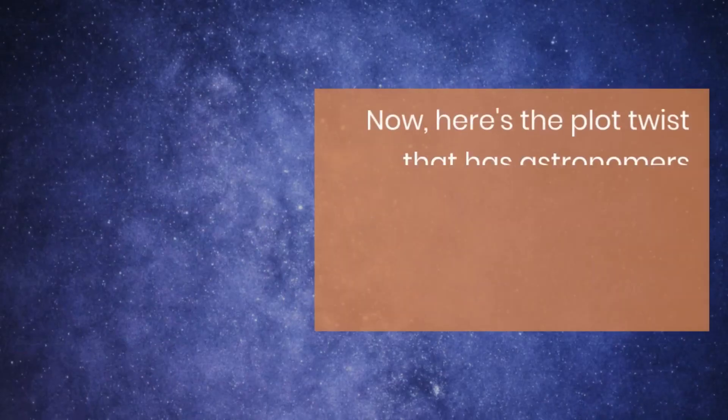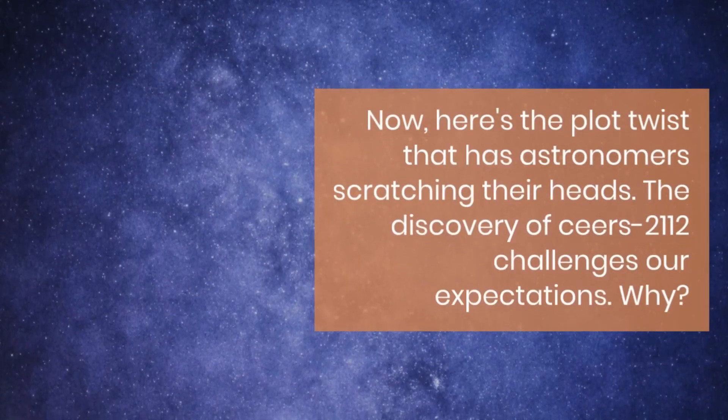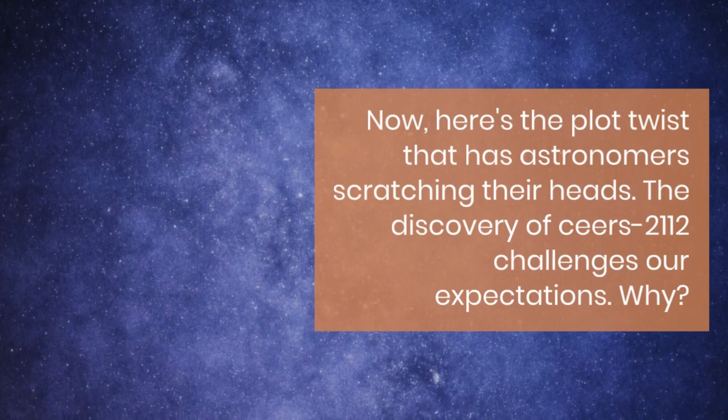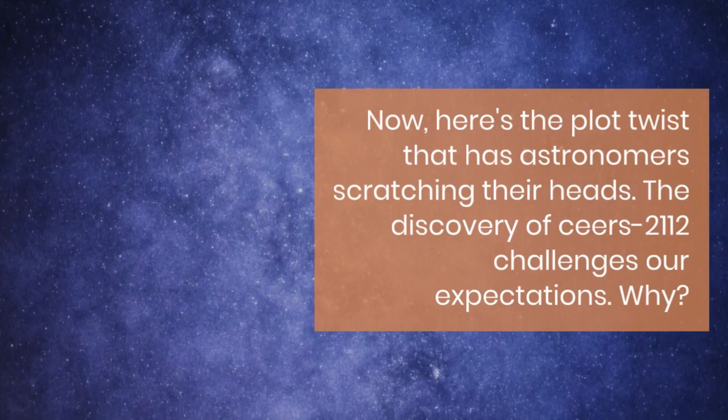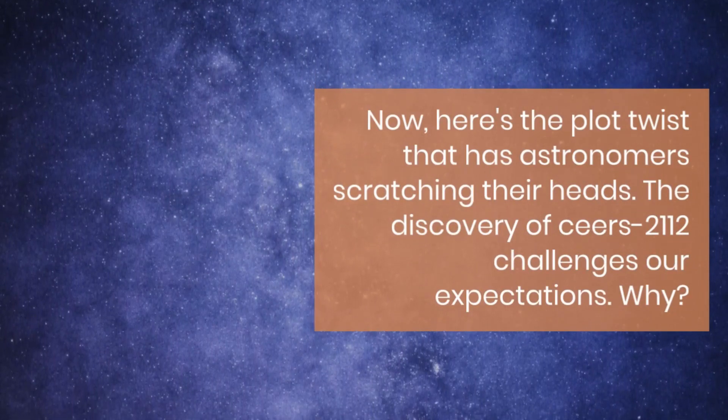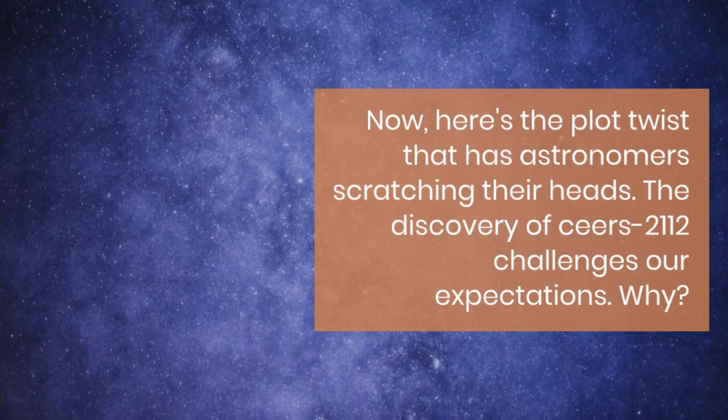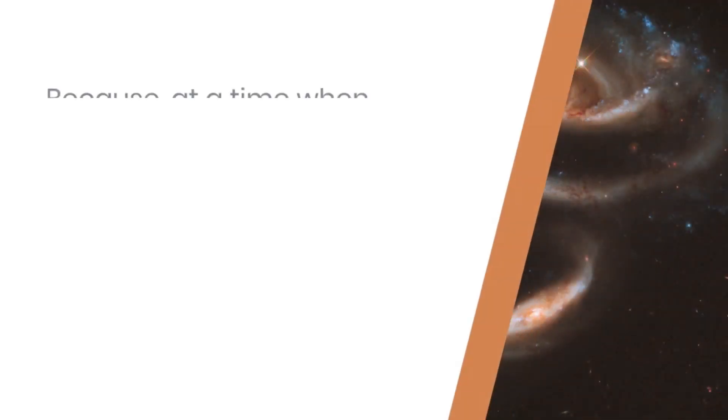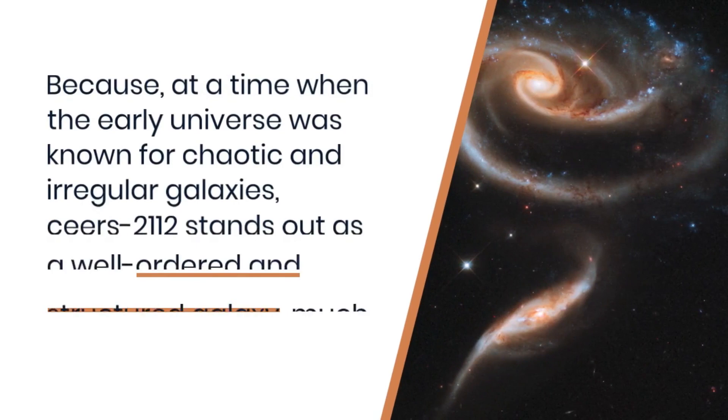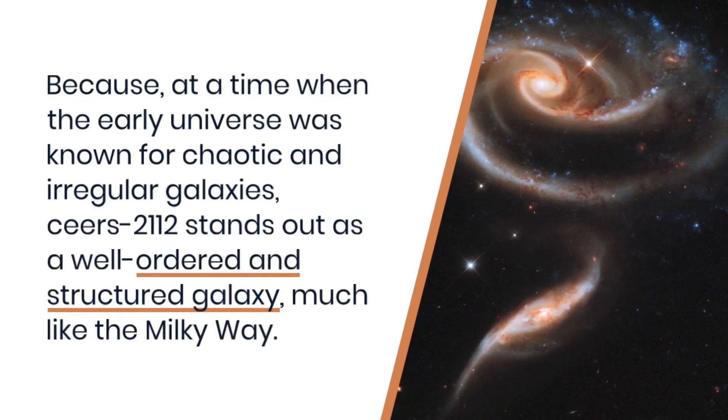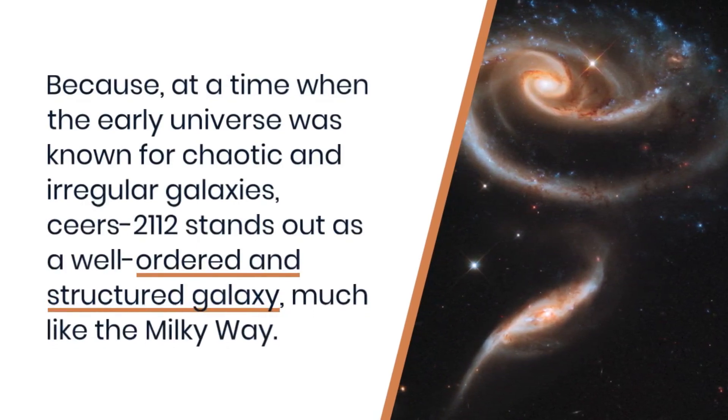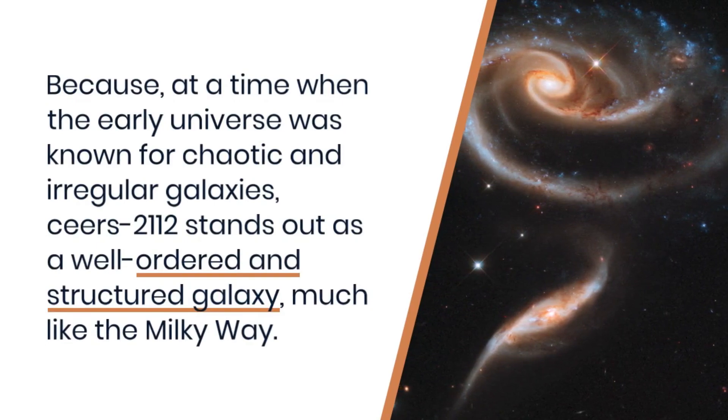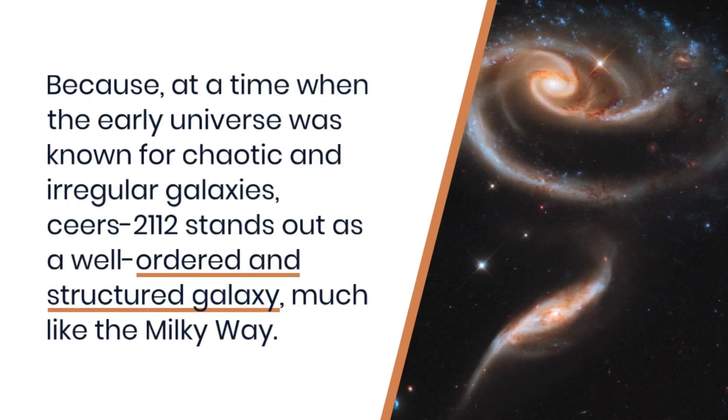Now, here's the plot twist that has astronomers scratching their heads. The discovery of Ceers-2112 challenges our expectations. Why? Because, at a time when the early universe was known for chaotic and irregular galaxies, Ceers-2112 stands out as a well-ordered and structured galaxy, much like the Milky Way.